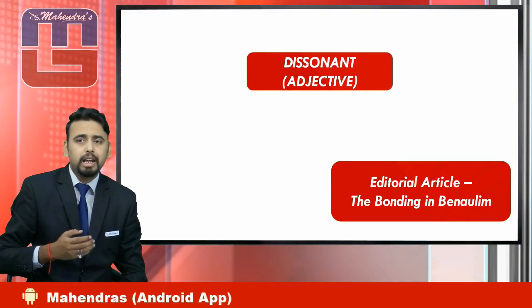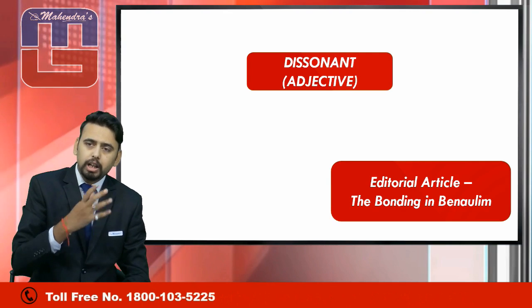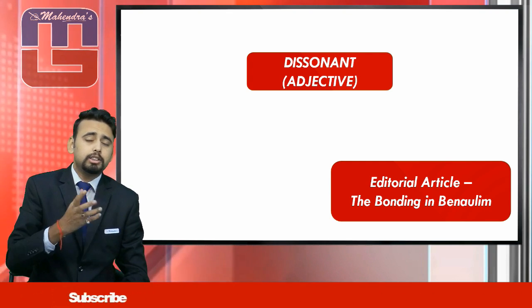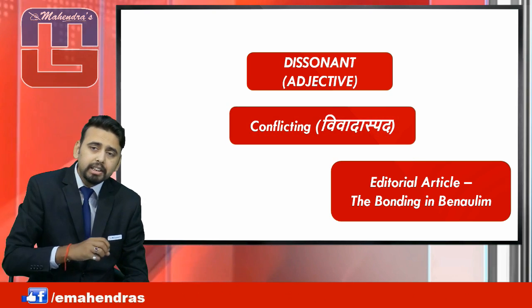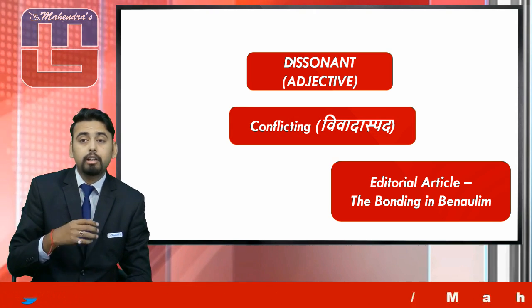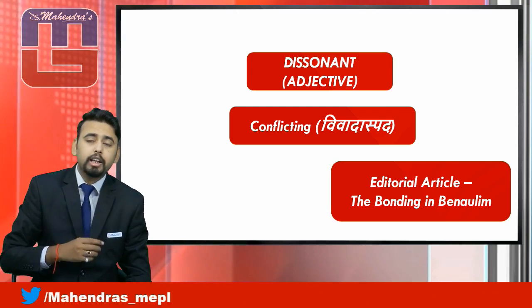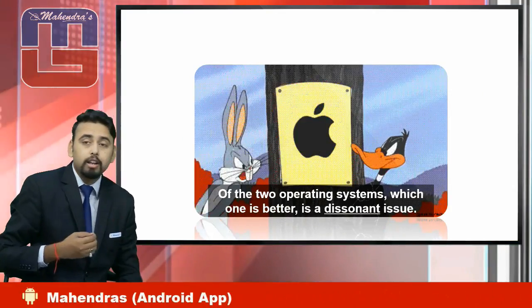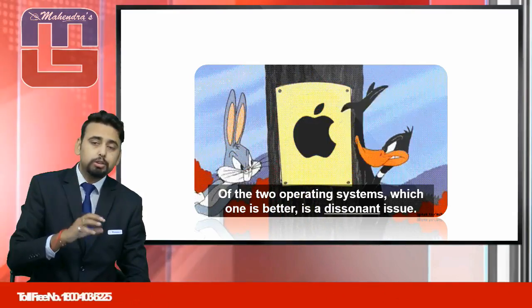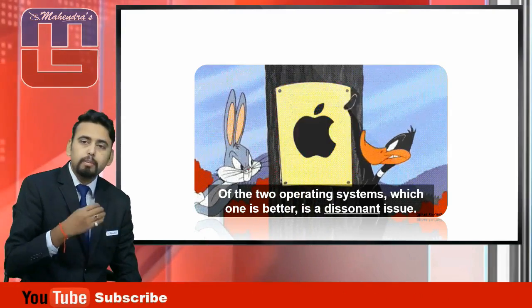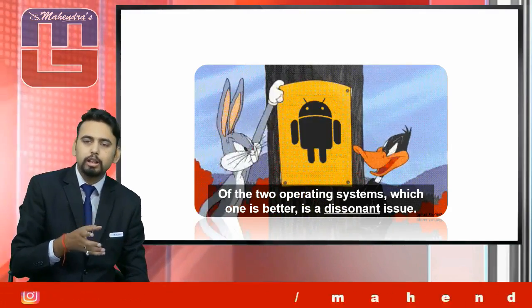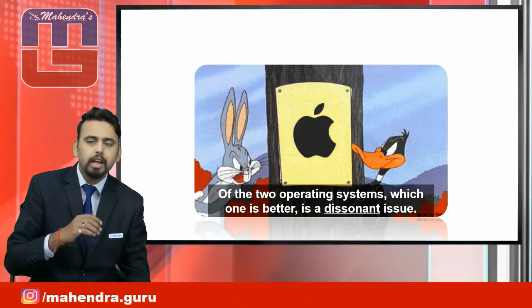Now let's move on. Our first word is 'dissonant.' Here you will see a live image example: of the two operating systems — Android and iOS — which one is better? This is a dissonant issue, meaning it is a disagreeable or conflicting matter.